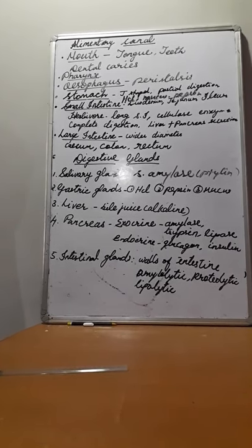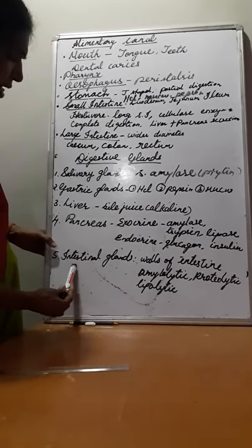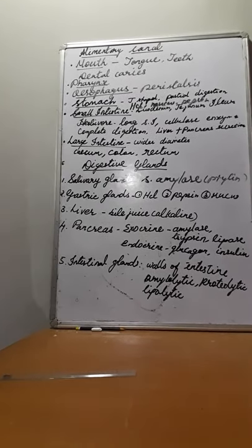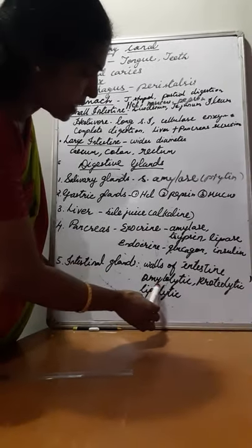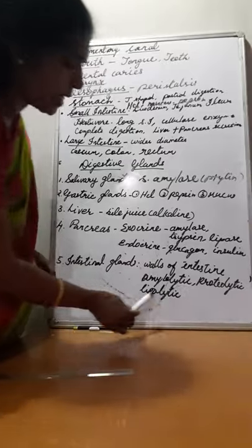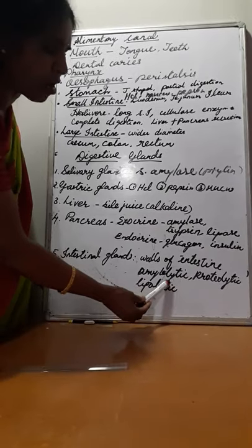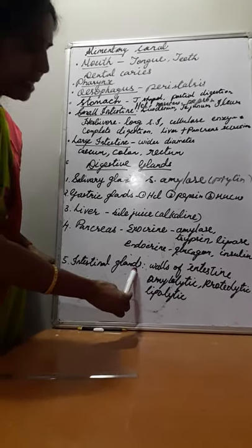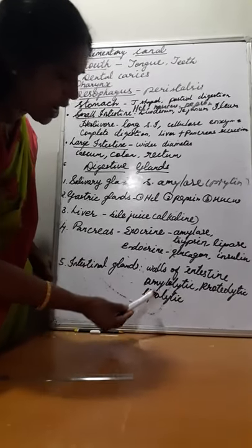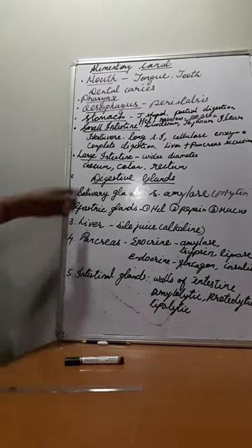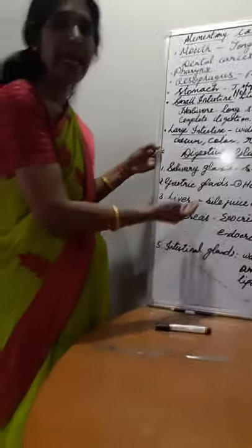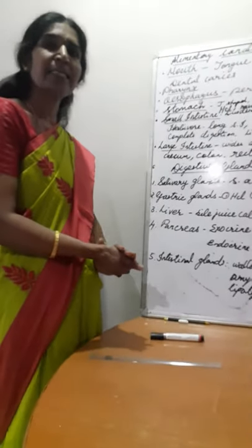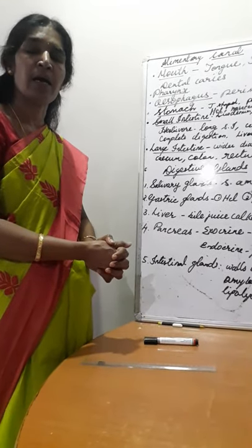The fifth gland is the intestinal glands. The walls of the intestine also secrete juice. The glands present in the intestine secrete amylolytic, proteolytic, and lipolytic enzymes, which complete the final digestion of food in the small intestine. These are the digestive enzymes present in the human digestive system, associated with and helping in the digestion process. In the next class, the mechanism of digestion will be explained.